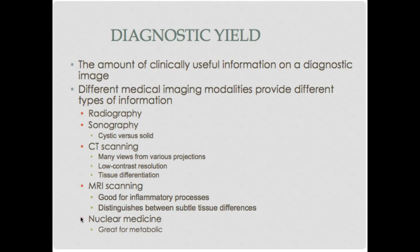The first thing they talk about is diagnostic yield. The diagnostic yield is the amount of clinically useful information on a diagnostic image. The goal is to have the highest diagnostic yield that we can get. Looking at the difference in medical imaging modalities, we have radiography, which is really good for bones. We can see tough soft tissues, any kind of calcifications, and some pathologies.